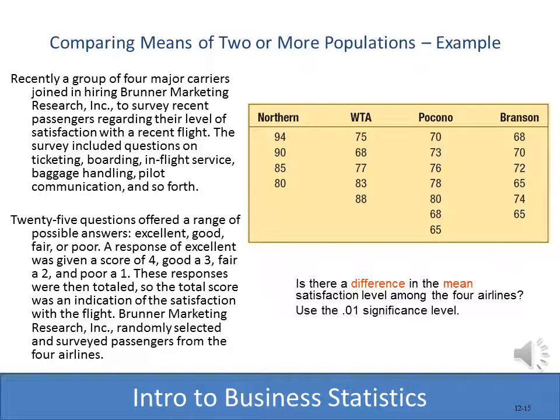Here's an example with four different samples. We have four airlines — Northern, WTA, Panko, and Branson — each given satisfaction surveys. We want to know if there is a difference in the means between these four airlines' satisfaction survey results.